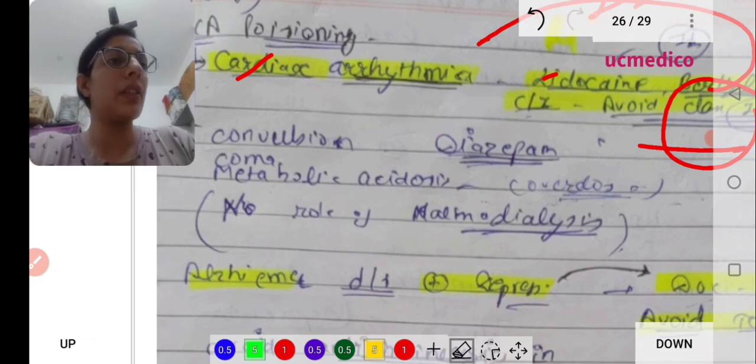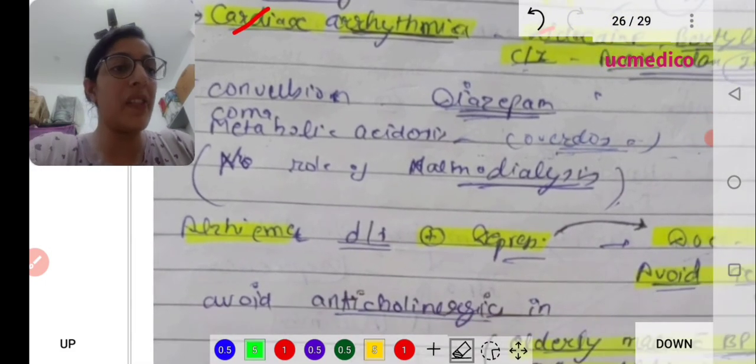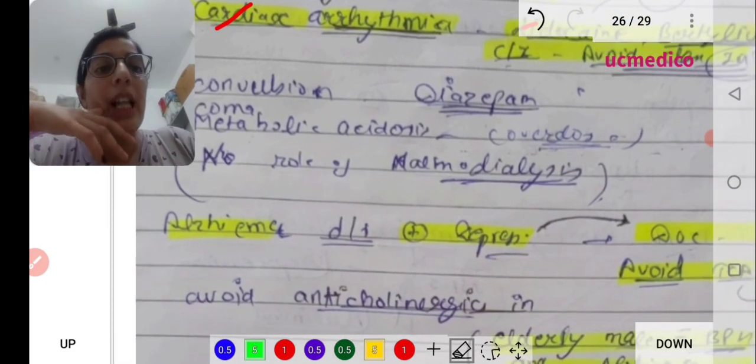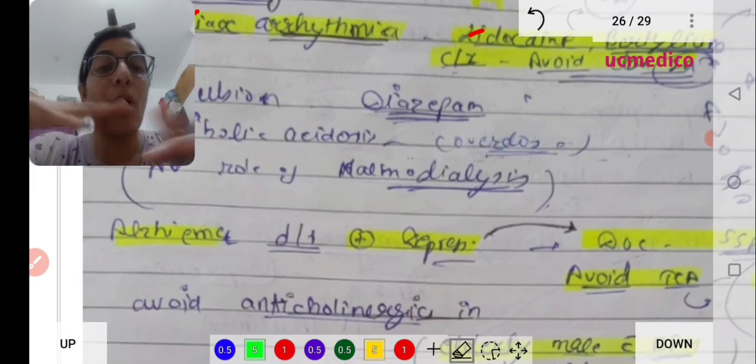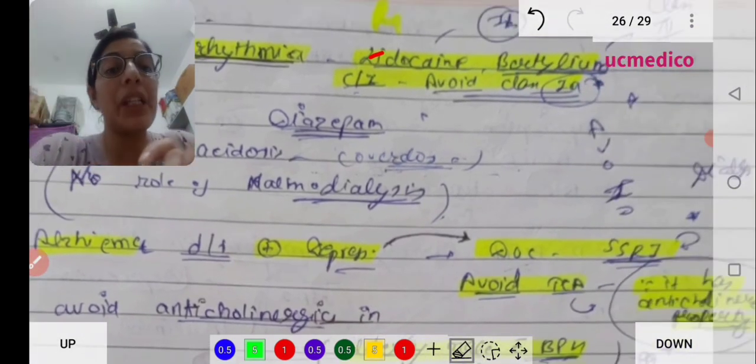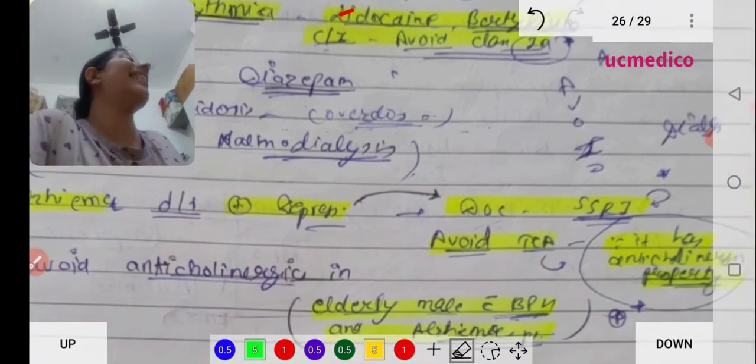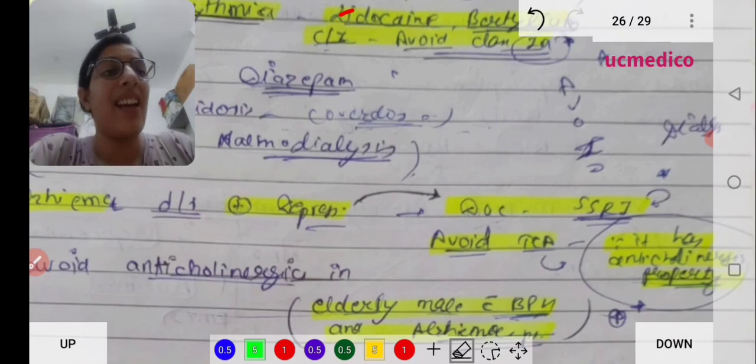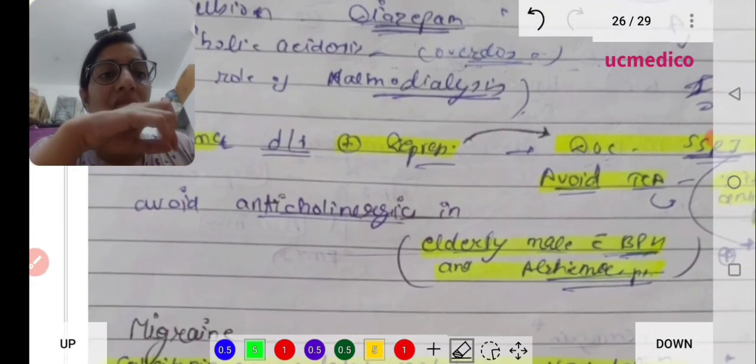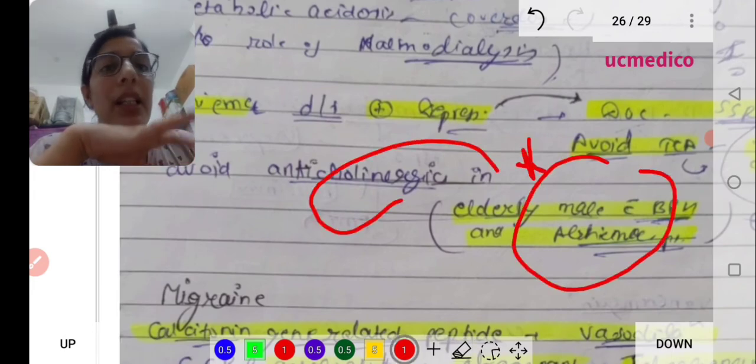Alzheimer's disease plus depression - patient with Alzheimer's disease presenting with depression, the drug of choice is SSRI. Avoid tricyclic antidepressants. Anticholinergics have to be avoided in elderly patients with BPH and Alzheimer's disease.